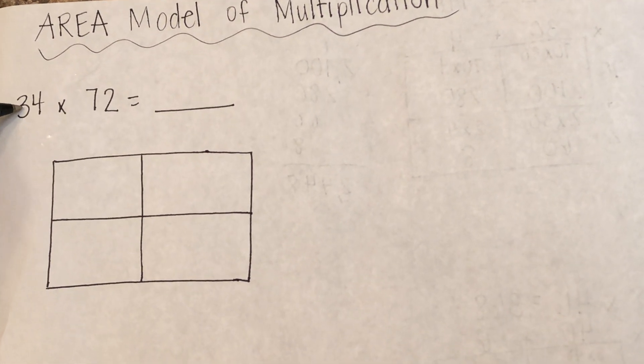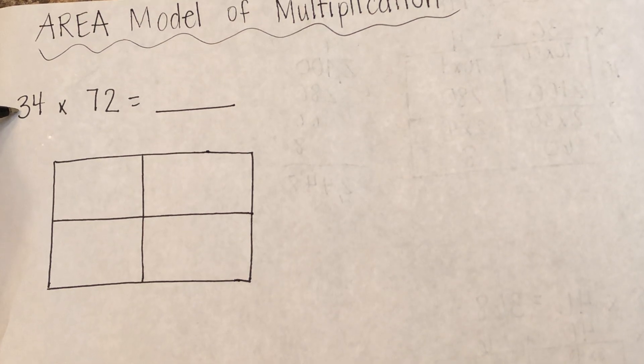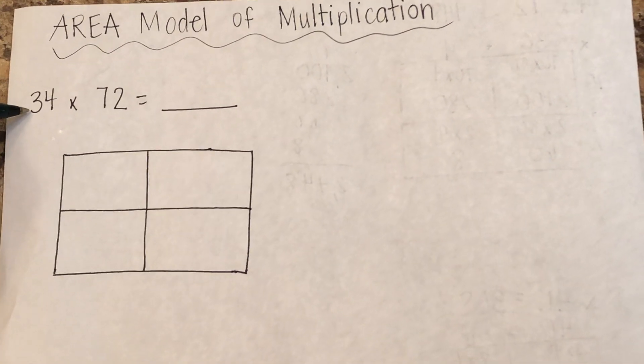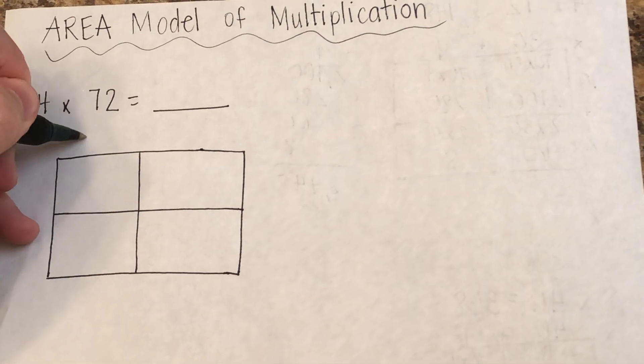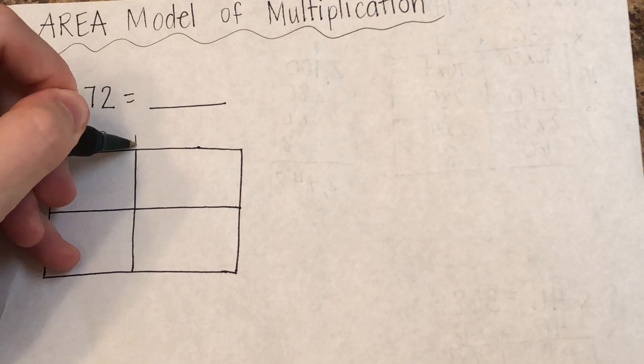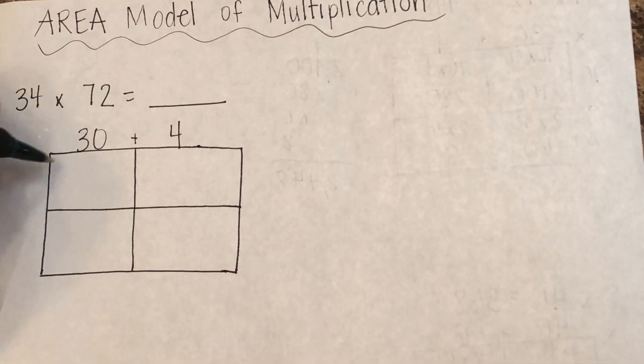So for the first one, you have 34 times 72. We're going to take the expanded form of 34. Since that 3 is in the tens place, its value is 30. So we have 30, and that 4 is in the ones place. The value of that 4 is 4, so 30 plus 4.